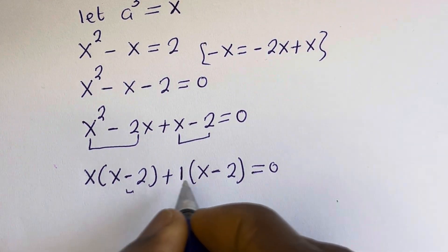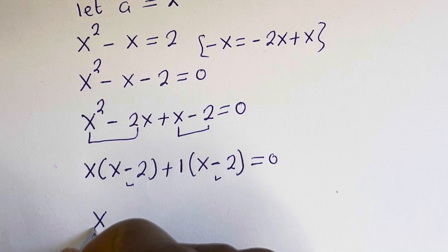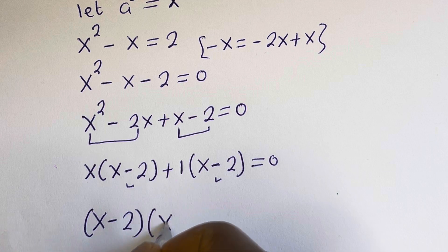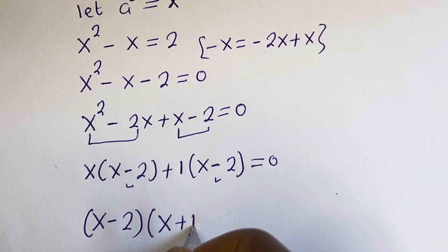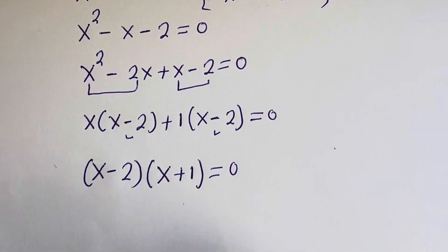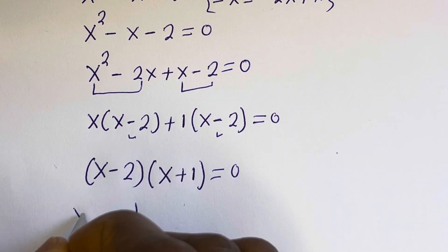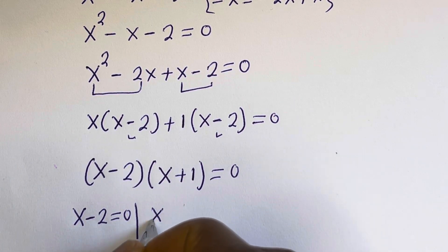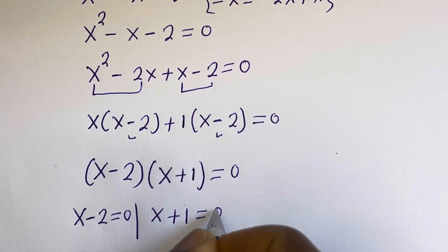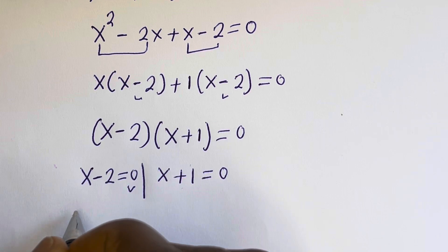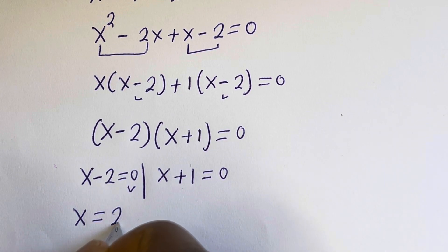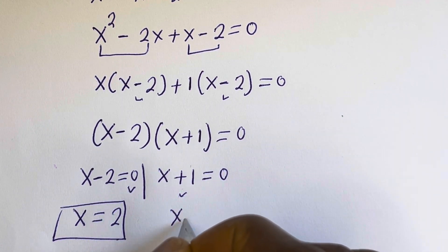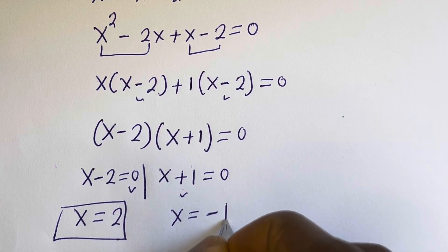x minus 2 is common, so we have x minus 2 bracket x plus 1 is equal to 0. There are two cases: the first case is x minus 2 equals 0, and the second case is x plus 1 equals 0. From the first case, x is equal to 2, and from the second case, x is equal to minus 1.